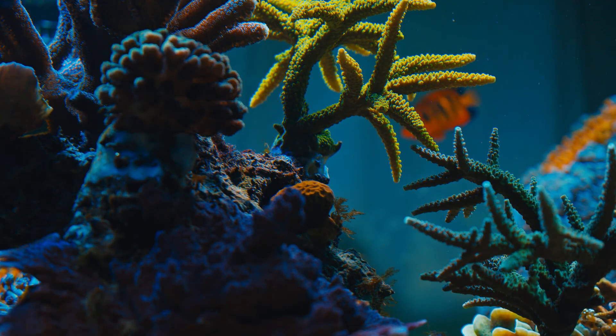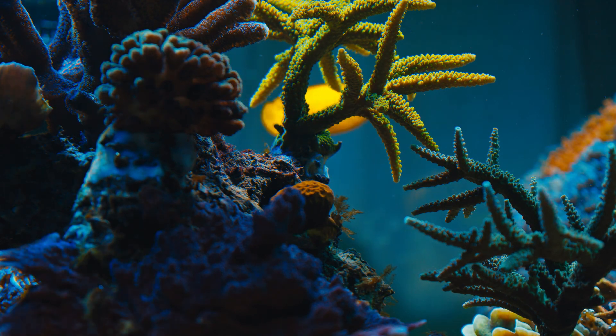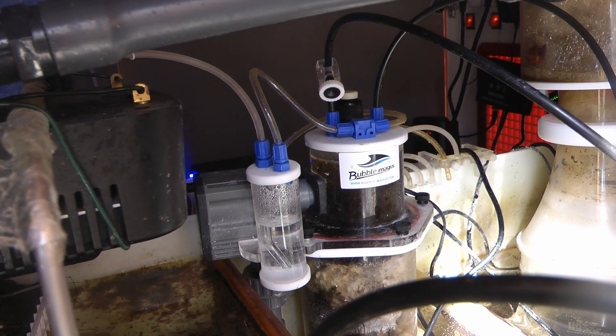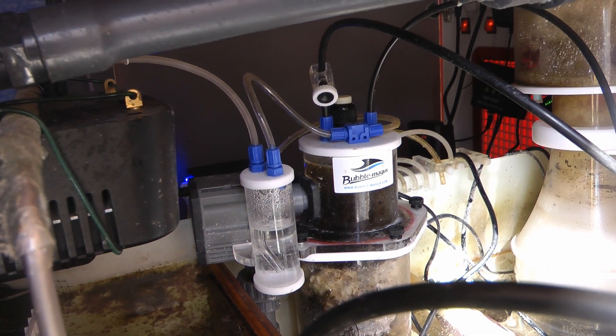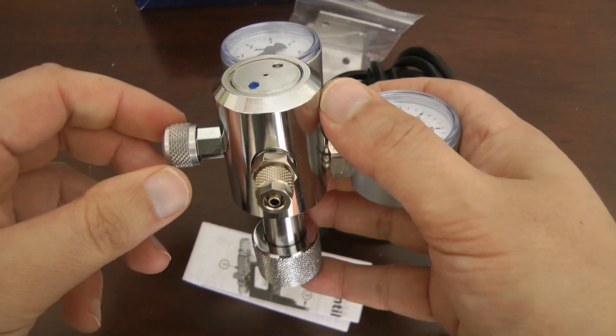If the alkalinity demand of the tank changes, because the corals grow for example, this setup allows really precise changes in the amount of CO2 being injected into the reactor. This is the only control over the alkalinity of the tank, and it needs to be top-notch.